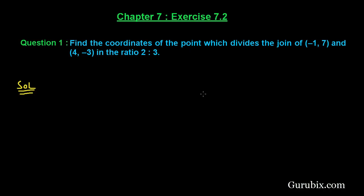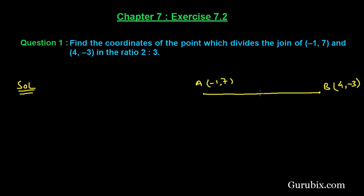First of all we shall draw a line and name one of its endpoints A, with coordinates (-1, 7), and the other end B, with coordinates (4, -3). Suppose there is a point C whose coordinates are X and Y, and this point C divides line AB in the ratio 2:3.